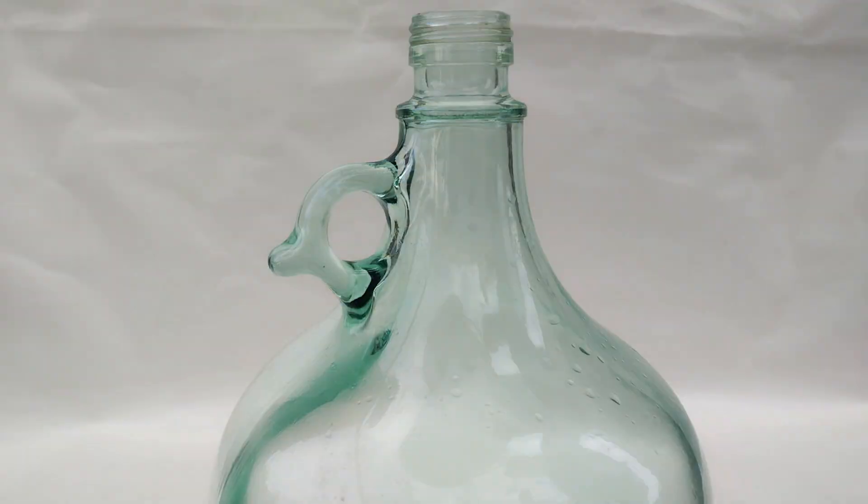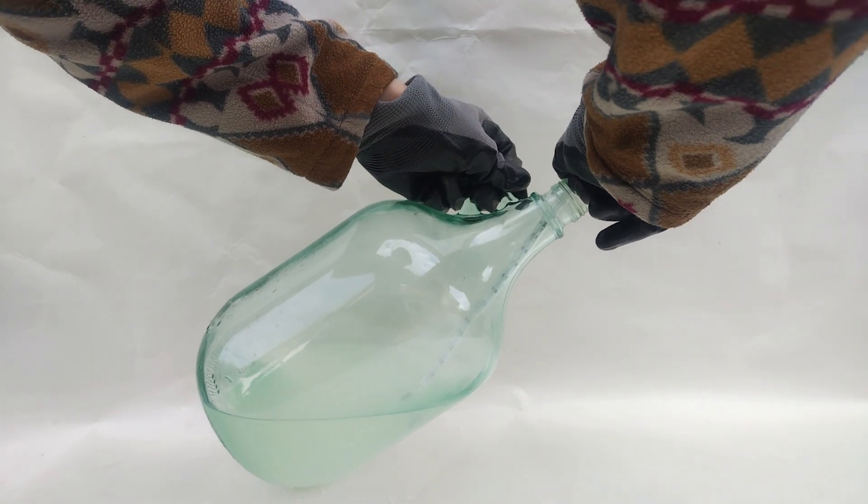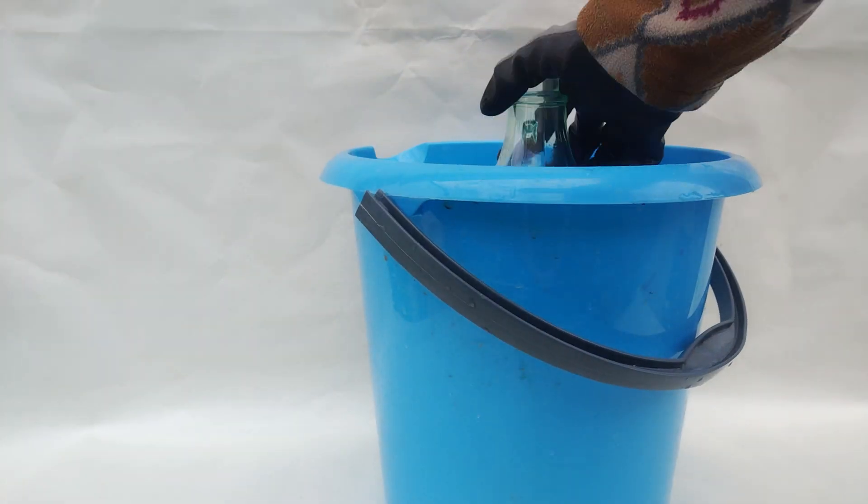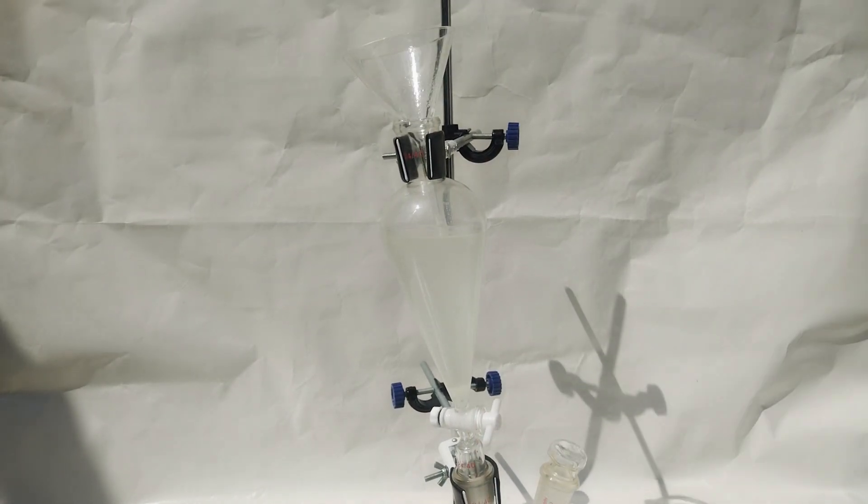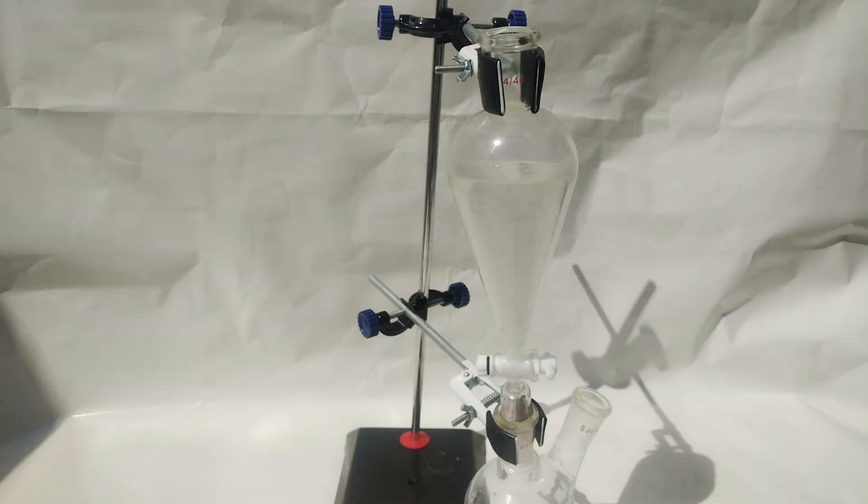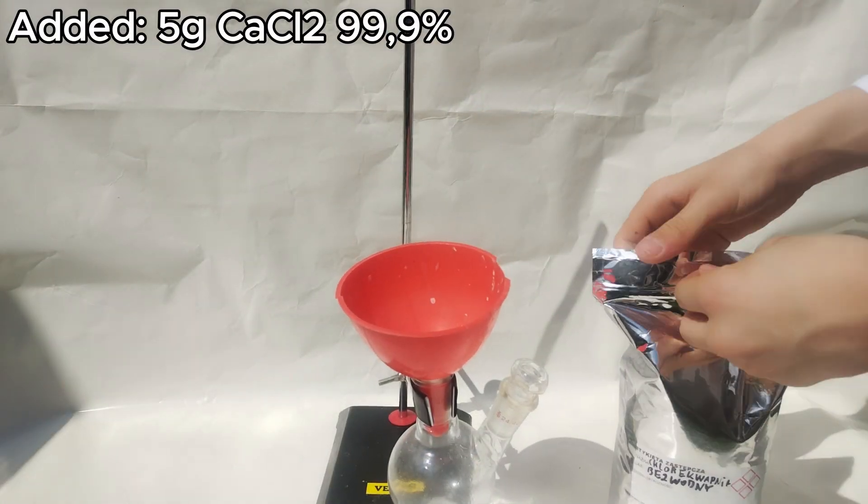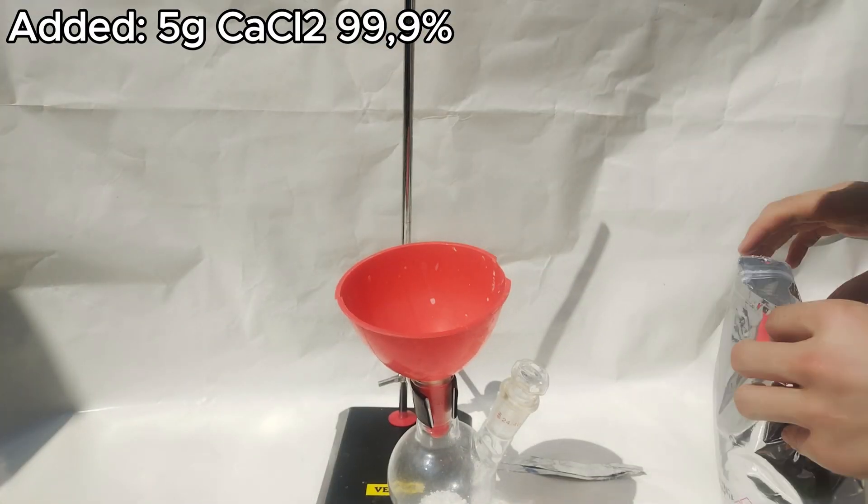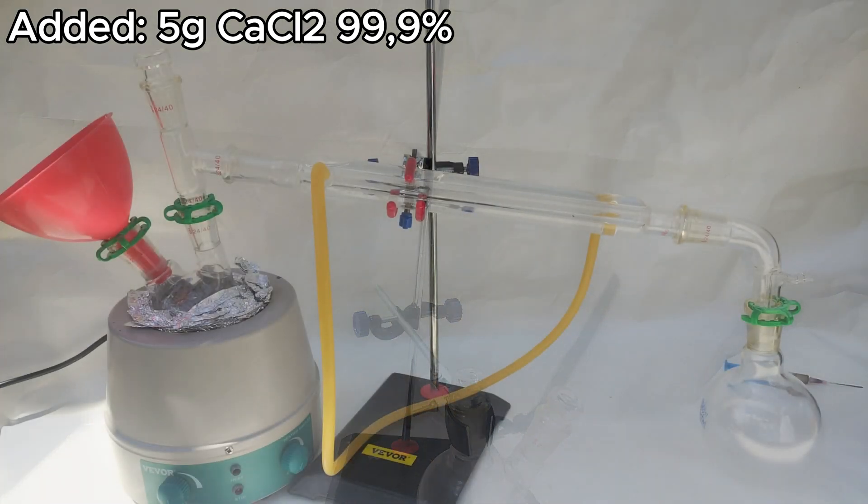I let the mixture react for about 24 hours away from direct sunlight to hopefully halt the production of phosgene gas. Once the mixture has fully reacted, we collect the chloroform, which is the bottom layer, with a separation funnel. I add some calcium chloride as a drying agent to remove any excess water that might be present in the flask.